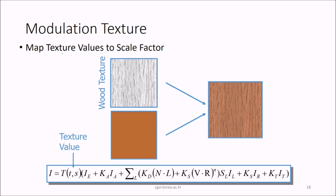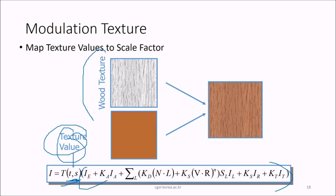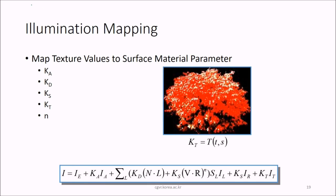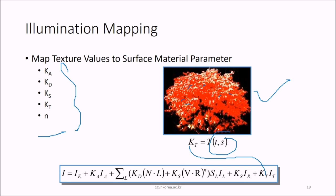Now the texture mapping applications. First is modulation texture — we map texture values to a scale factor. Second is illumination mapping — we map texture values to surface material parameters such as KA, KD, and KS. So KT will be equal to the texture function TTI.